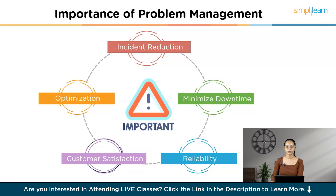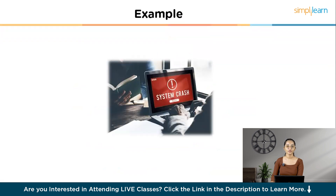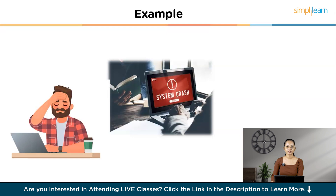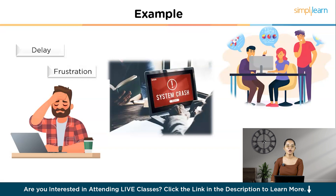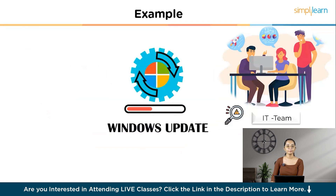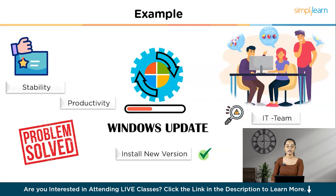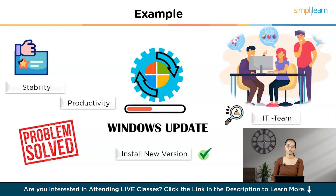To understand the importance of problem management, consider a real-world example of a company where employees frequently face system crashes due to software conflicts. Each time this happens, productivity takes a hit. Initially, the IT team applies quick fixes, but the crashes keep recurring. With problem management, the IT team investigates the root causes, discovers that a recent software update is incompatible with other applications, rolls back the update, and implements a compatible version. This permanent fix stops the crashes, improves overall system stability, increases employee productivity, and saves money by avoiding repeated downtime and support costs.